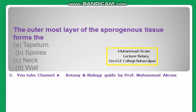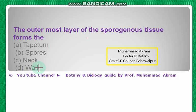The next question: the outermost layer of sporogenous tissue forms — tapetum, spore wall, neck wall, or support? The correct option is option A — tapetum.